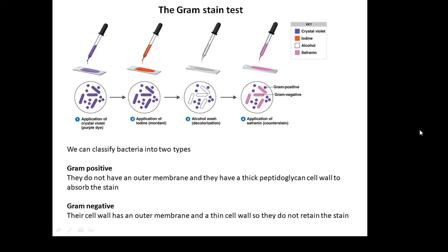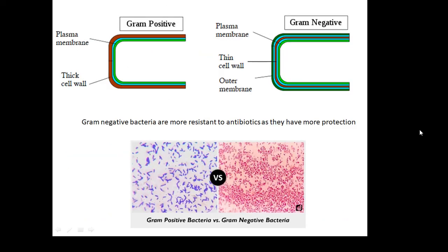Gram-positive and gram-negative — so what? Here we see a diagram showing both. The gram-positive ones have a thick cell wall which goes purple. The gram-negative ones have an outer membrane and a thin cell wall. Gram-negative bacteria are more resistant to antibiotics as they have more protection because it's harder for the antibiotics to get in.